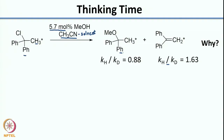What I would like you to do is write the mechanisms for formation of each of these products and then, based on the mechanism, see if you can justify the KH over KD value. I want you to write the mechanism for formation of each of these products — call this product A and this product B — and then based on your mechanism, you should be able to justify why you see an inverse kinetic isotope effect in one case and a normal kinetic isotope effect in the other. Go ahead, press the pause button and work out this problem.